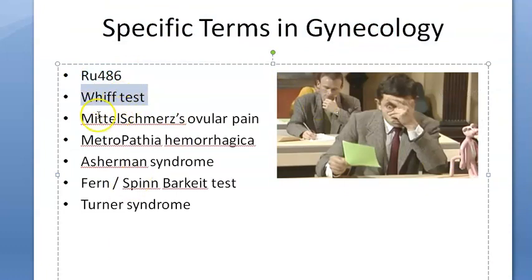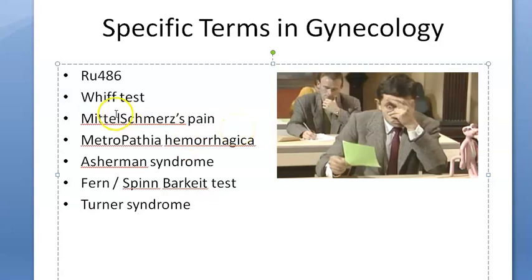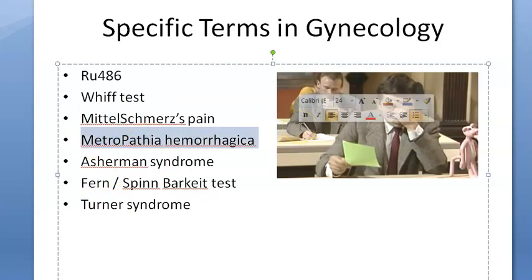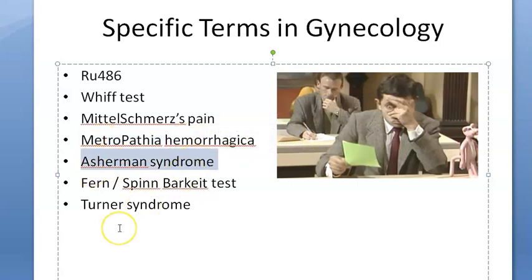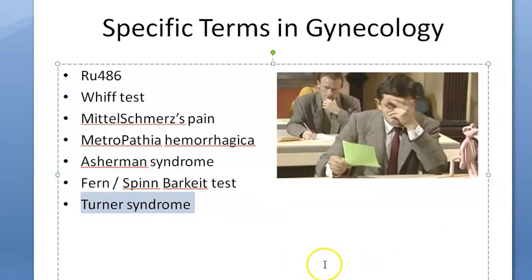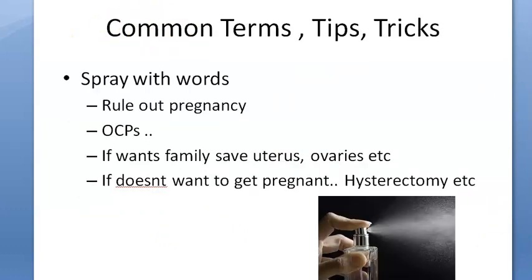Specific gynecology terms: mifepristone - page 460 to 486. Whiff test - for bacterial vaginosis. Mittelschmerz - ovulatory pain that occurs at ovulation; the examiner won't write 'ovulatory pain', they'll just say 'mittelschmerz'. Metropathia hemorrhagica - a form of dysfunctional uterine bleeding in perimenopausal women. Asherman's syndrome - intrauterine adhesions (synechiae) caused by dilatation and curettage, causing secondary amenorrhea. Spinnbarkeit test - refers to cervical mucus pattern indicating ovulation. Turner syndrome - single X chromosome; know the features.